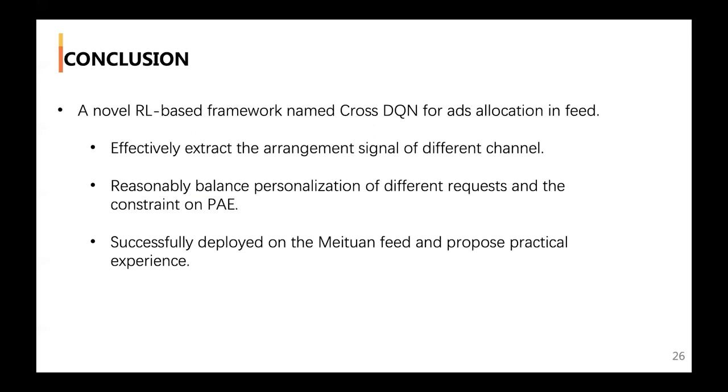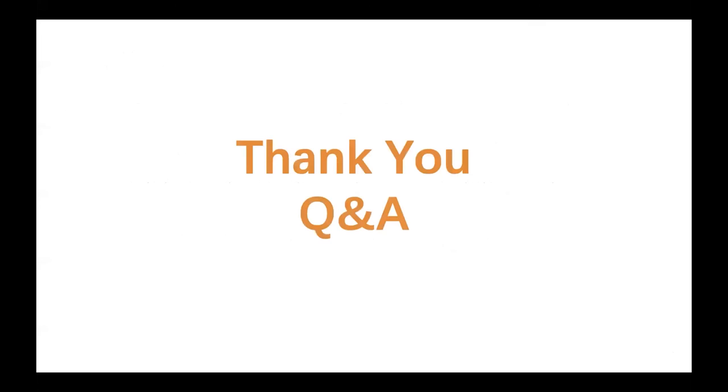In summary, we propose a novel RL-based framework named Cross-DQN for ad allocation in feed. First, Cross-DQN effectively extracts the arrangement signal of different channels in mixed lists through SSU and MSU. In addition, we introduce a regularization loss for batch-level constraint to balance the personalization of different requests under the constraint on PAE. Finally, both offline experiments and online A/B tests have demonstrated the superior performance of our approach. We successfully deployed it on Meituan feed and propose practical experience. Thank you.